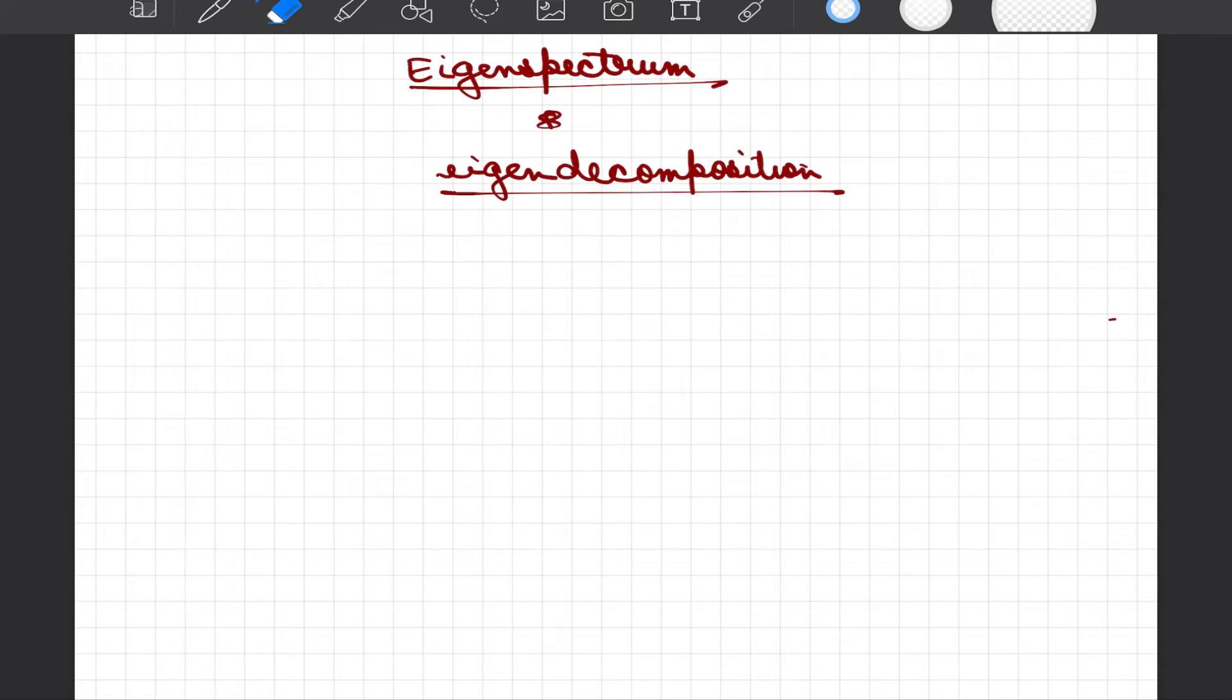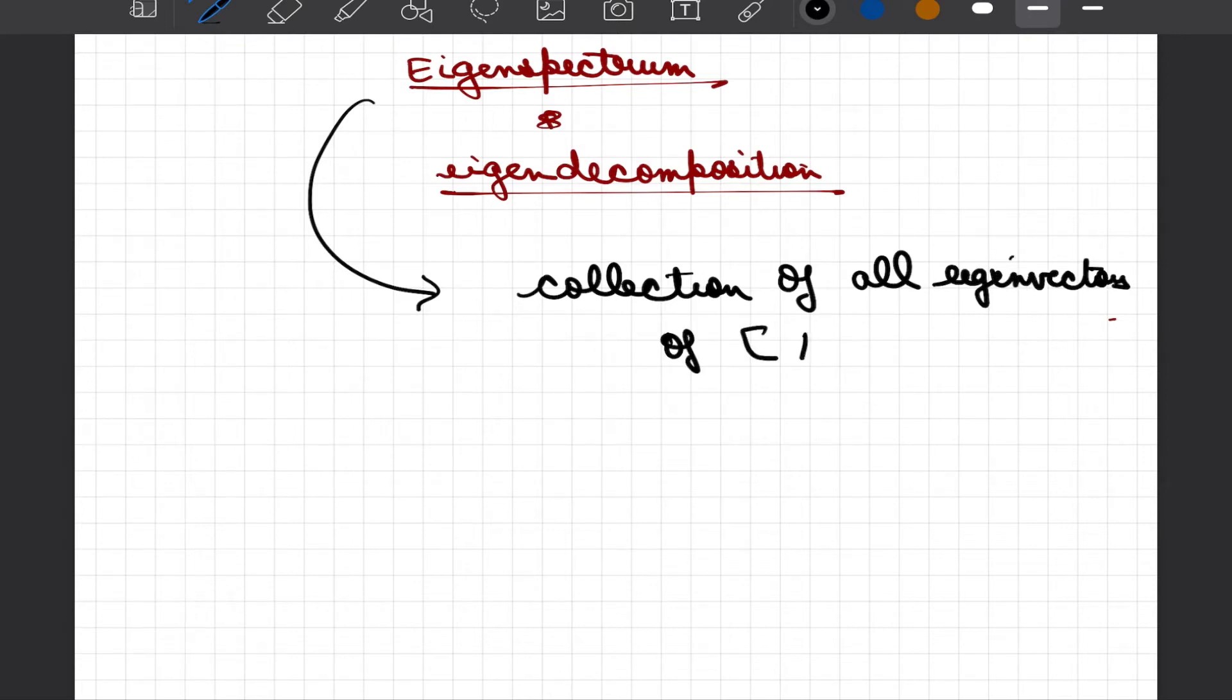In the context of eigenspectrum, we learned that whenever we put all the eigenvectors associated with particular value of lambda, they would classify as eigenspace as they will span certain subspace. The number of independent columns would be the dimension of that subspace. We can extend this concept to define eigenspectrum, which is the collection of all eigenvectors of A.